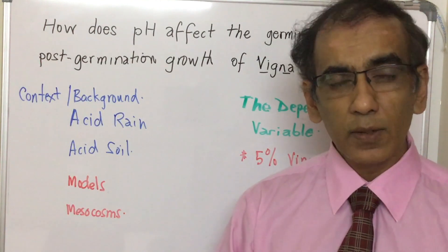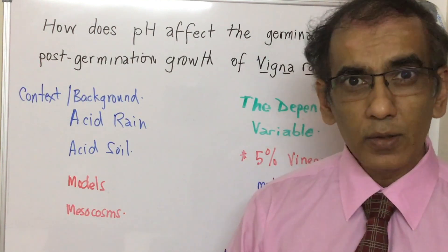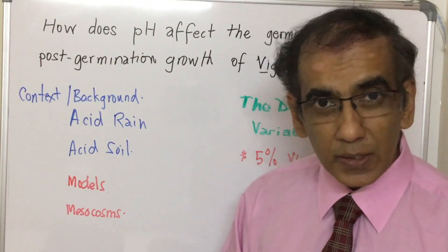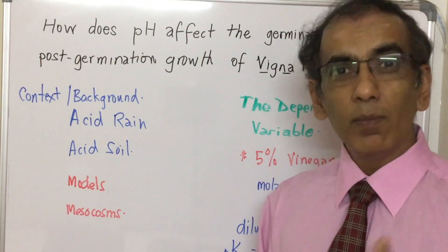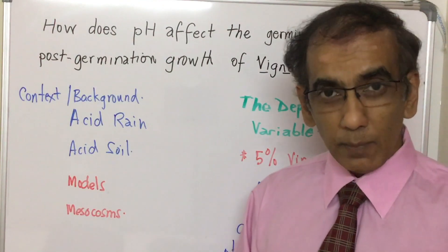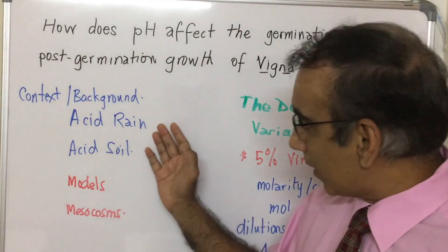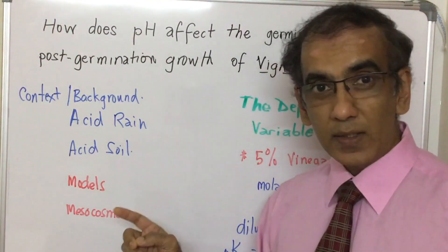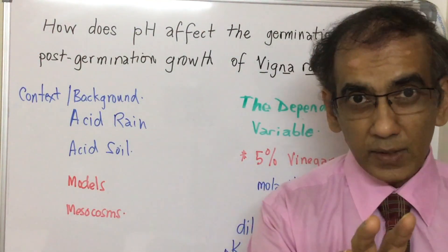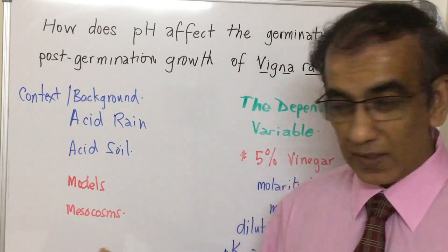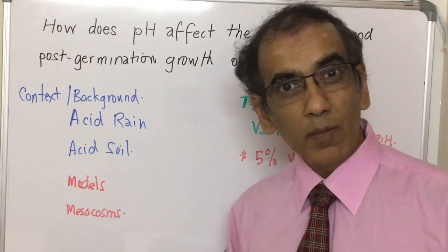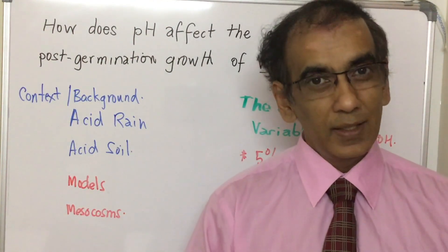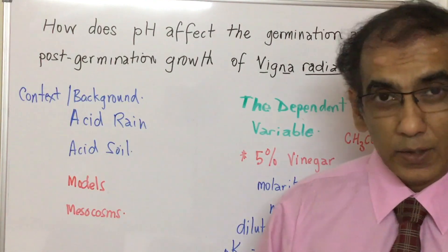There should be some kind of personal reason or connection to the investigation. Given that this is a model investigation to set you up for the IA, you should talk about acid rain, acid soil, and the use of models in science. More specifically, we can relate Practical 5 to this activity — the use of the mesocosm, where a small piece of the natural environment is brought into the lab under controlled conditions.